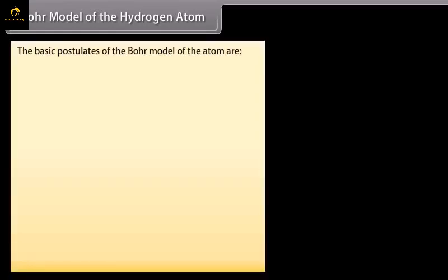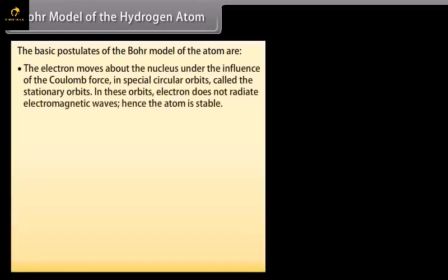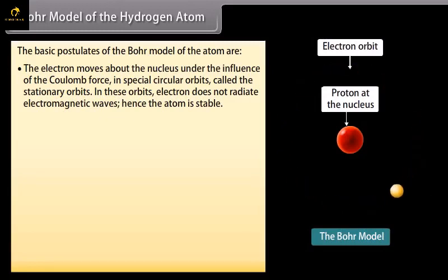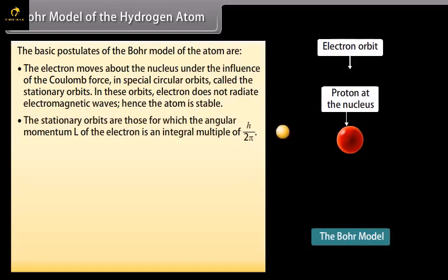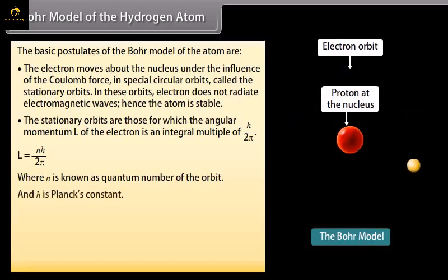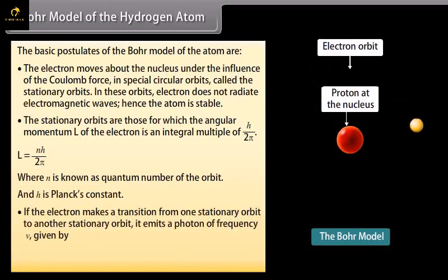Bohr's model of the hydrogen atom: The basic postulates are — the electron moves about the nucleus under the influence of the Coulomb force in special circular orbits called stationary orbits. In these orbits, the electron does not radiate electromagnetic waves, hence the atom is stable. The stationary orbits are those for which the angular momentum L of the electron is an integral multiple of h/2π: L = Nh/2π, where N is the quantum number of the orbit and h is Planck's constant.